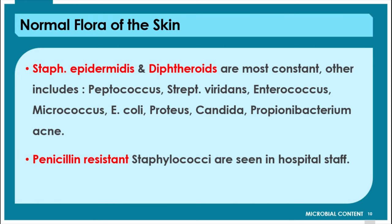Penicillin-resistant Staphylococcus species are seen in hospital staff. This is because in hospitals, a number of antibiotics are used and organisms acquire resistance to drugs — that is why penicillin-resistant Staphylococcus species are found on the skin of hospital staff. We stop here for the normal flora of the skin and will see the next part in the next lecture.